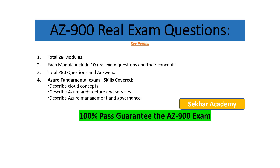Here are some key points about the AZ-900 real exam questions. There are different category bases, and I have created 28 modules in this series. Each module includes 10 real exam questions and concepts, giving a total of 280 question answers. The main skills covered are: describe cloud concepts, describe Azure architecture and services, and describe Azure management and governance.